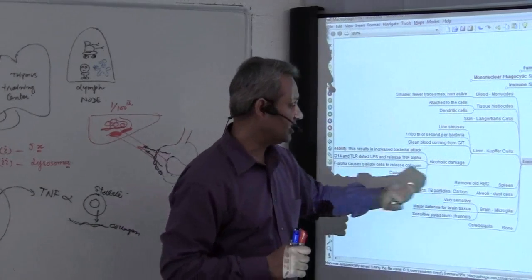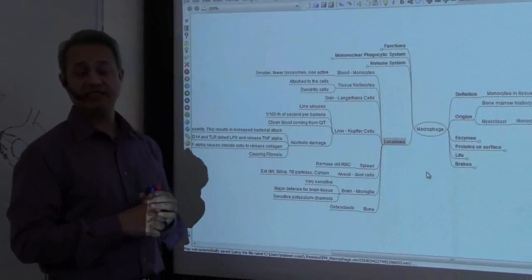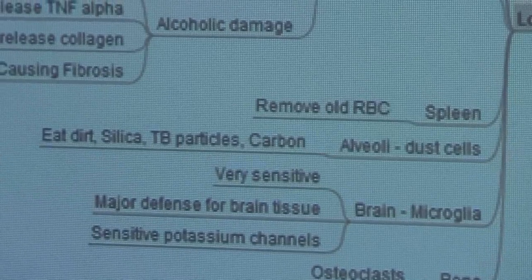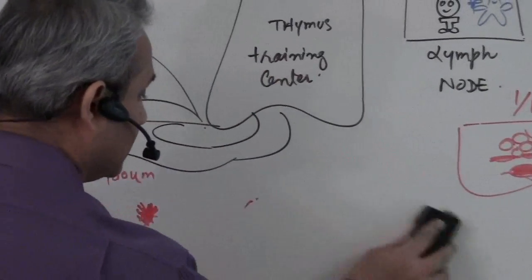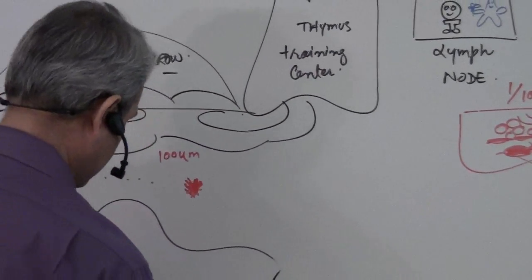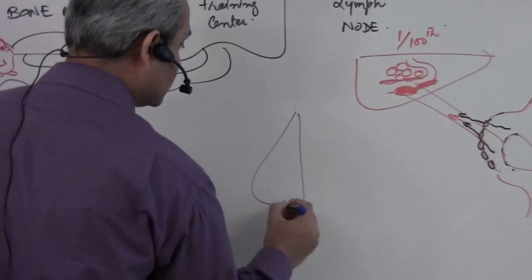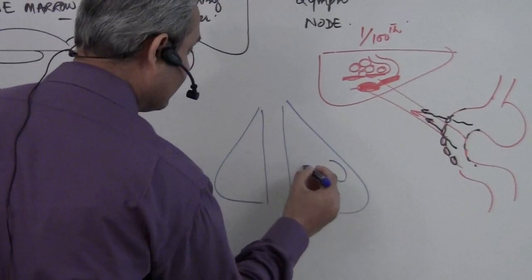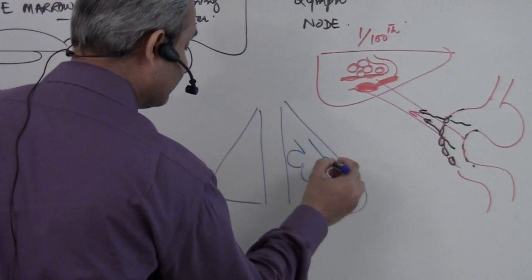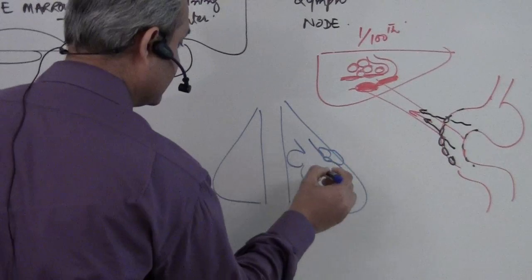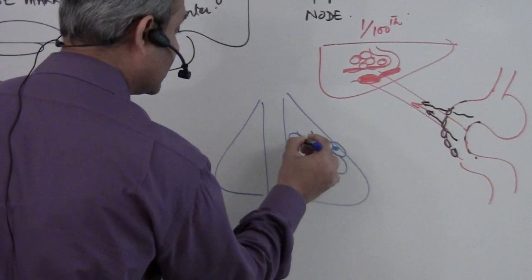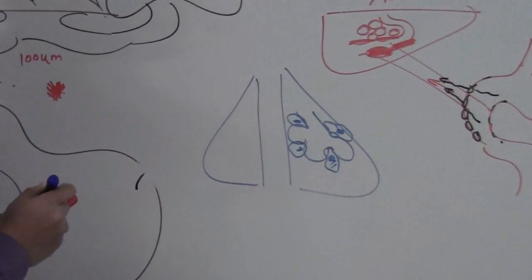In the alveoli, the dust cells or the alveolar macrophages. So let's say this is the lung tissue and we have alveolus and alveolus and alveolus, and in these alveoli are sitting macrophages as well. What are they doing? They are doing very important function.